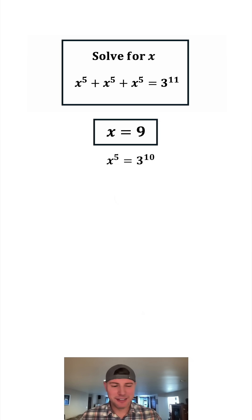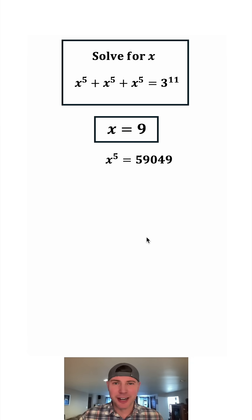But there's a little bit more we can do. Three to the tenth is equal to fifty nine thousand forty nine. So we're trying to find all the solutions of x to the fifth equals fifty nine thousand forty nine.